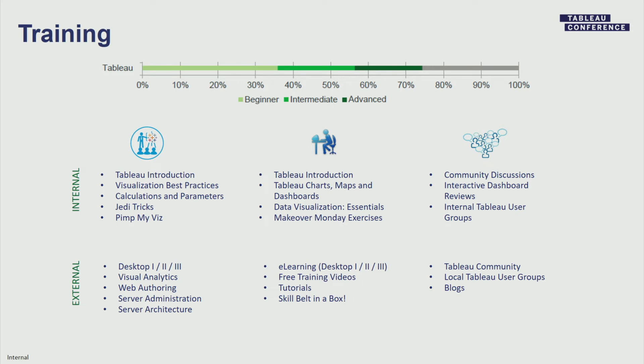We're also partnering with Tableau on something called Skill Belts. It's almost like internal certification - it'll somewhat prep you for desktop certifications but it's really more internal. We're going to create belts like Green Belts: here are seven different things you need to know, do, and prove you can do to get the belt. There's a bit of gamification with points and all the good stuff.